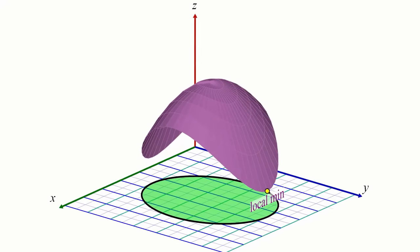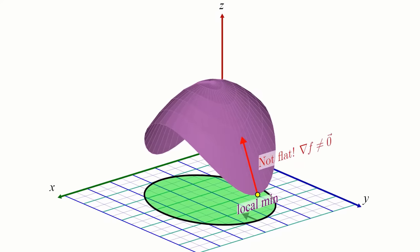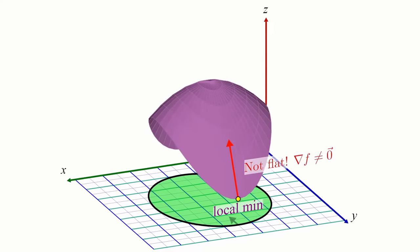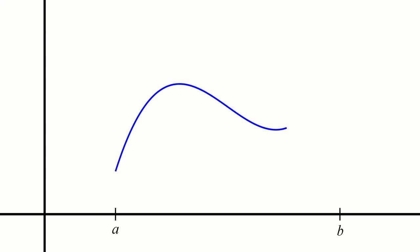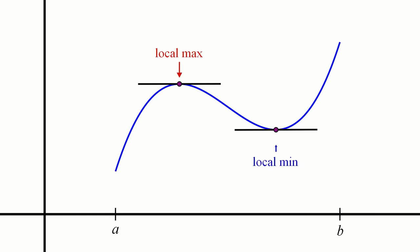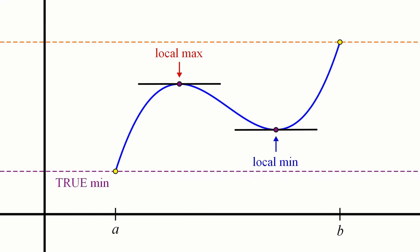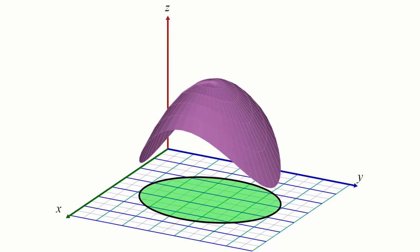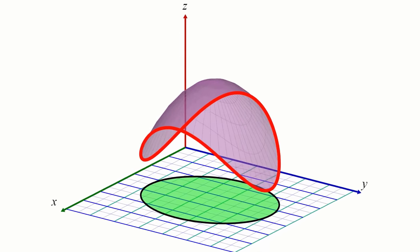This can be a problem because if the max or min does occur on the boundary, the gradient doesn't have to be 0 there — that is, the surface doesn't have to be flat there. This is just like how in single variable calculus, when finding the max or min of a function on some closed interval, you had to check the endpoints, or boundary, of the interval in addition to the flat points, because the curve did not have to be flat at the endpoints. Likewise, in addition to the flat points on the surface, we also have to check the boundary of the surface for local maxes and mins.